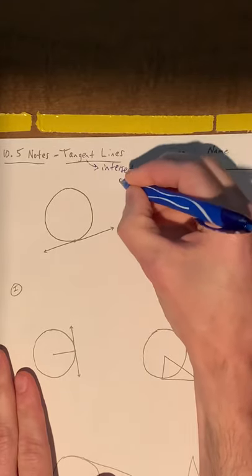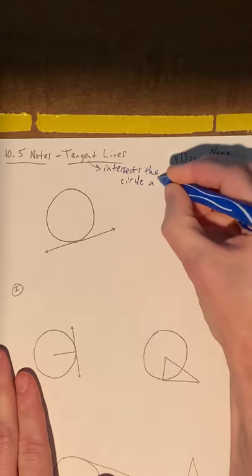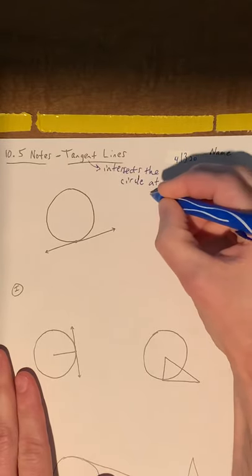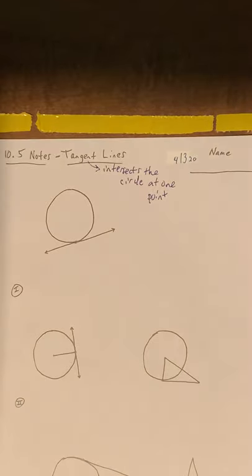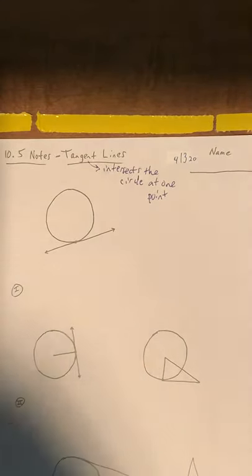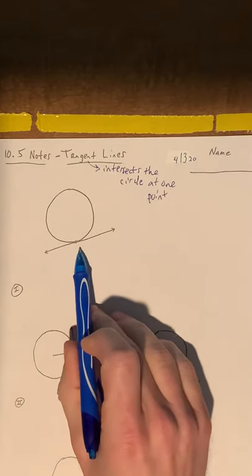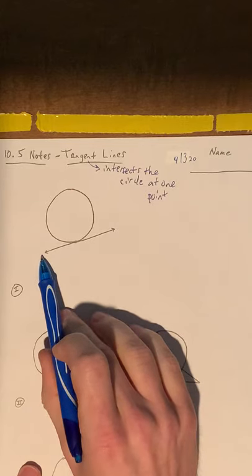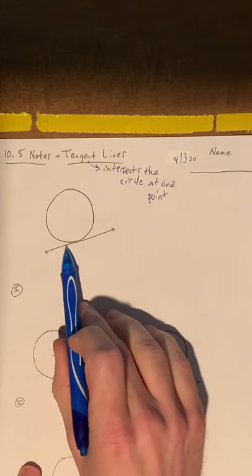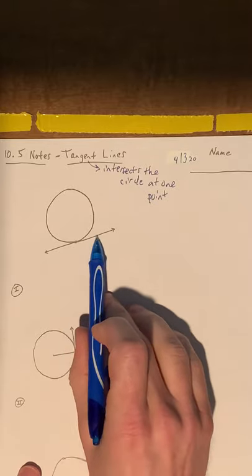Basically what a tangent line is, it means that it intersects the circle at a single point, at one, in exactly one point. So this right here could be an example of a possible tangent line, where it just goes right by the circle and grazes it, nicks it at one point, and then it keeps on going.